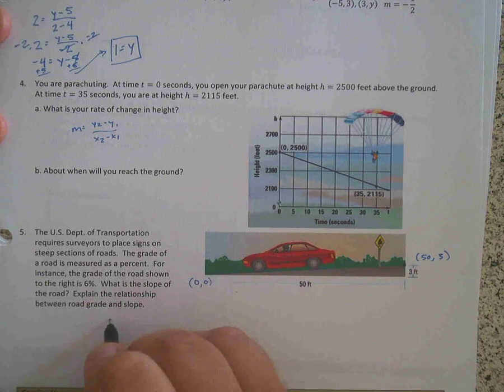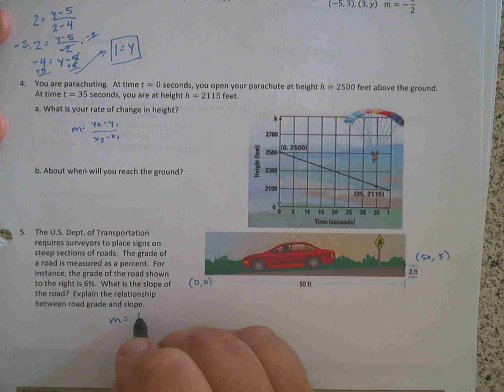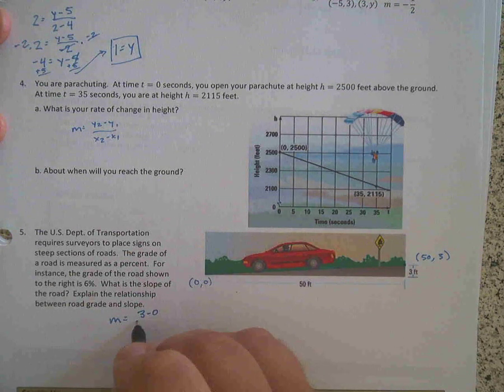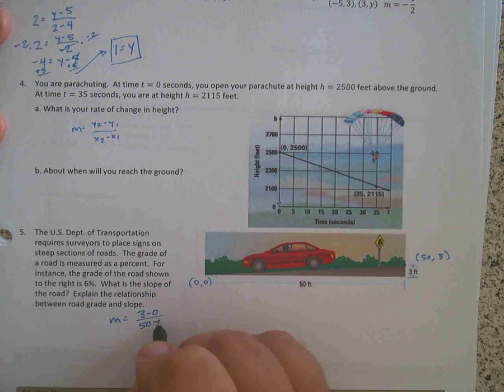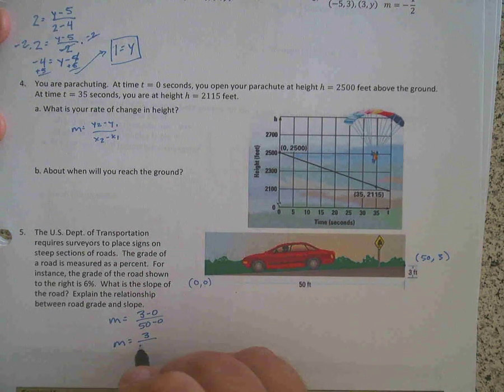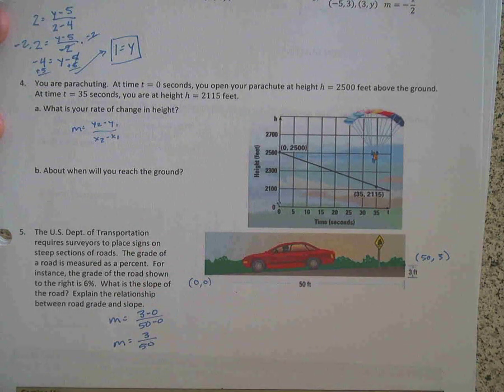So you could say that the slope equals, let's go y2 is 3. So let's go 3 minus 0 over 50 minus 0. And so my slope is 3 over 50. Okay, so that's my slope of that picture.